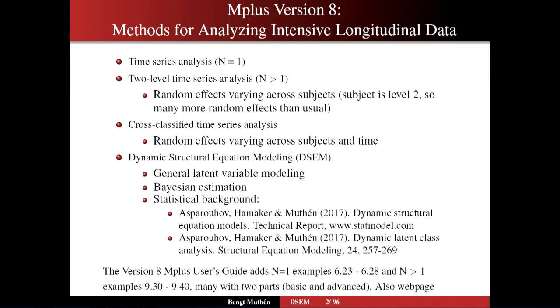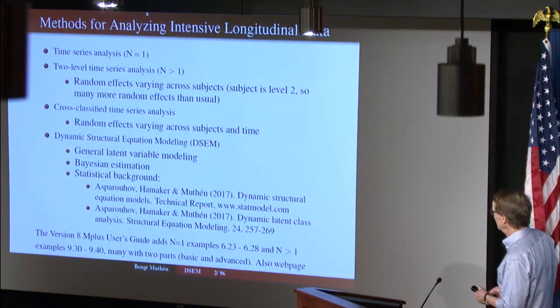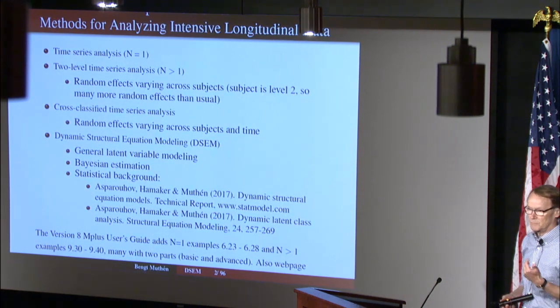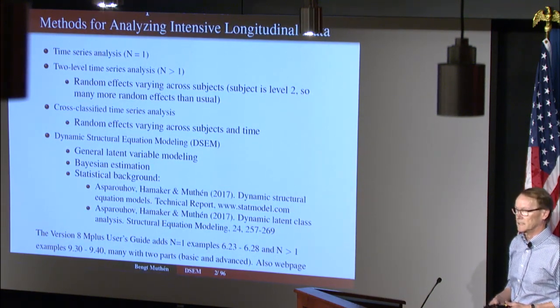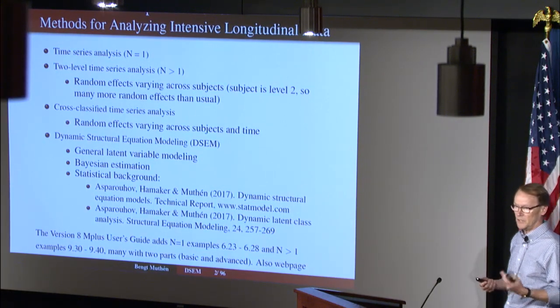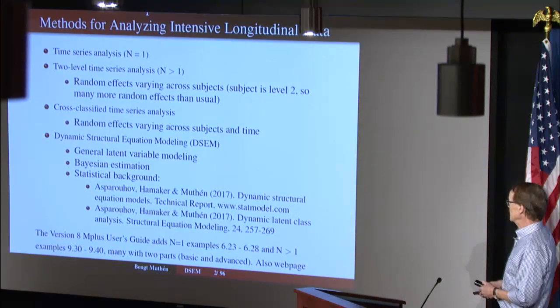That term is usually reserved for N=1 studies — one unit varying across time. We are going to take more of an interest in the two-level analysis, that is N greater than 1. We are going to look at all these various random effects — parameters that vary across individuals that Ellen started talking about. And the reason there are so many more than in typical multilevel modeling is that subject is on level 2, and anything that varies across subjects has large variances, giving us many more random slopes than in regular cross-sectional two-level analysis.